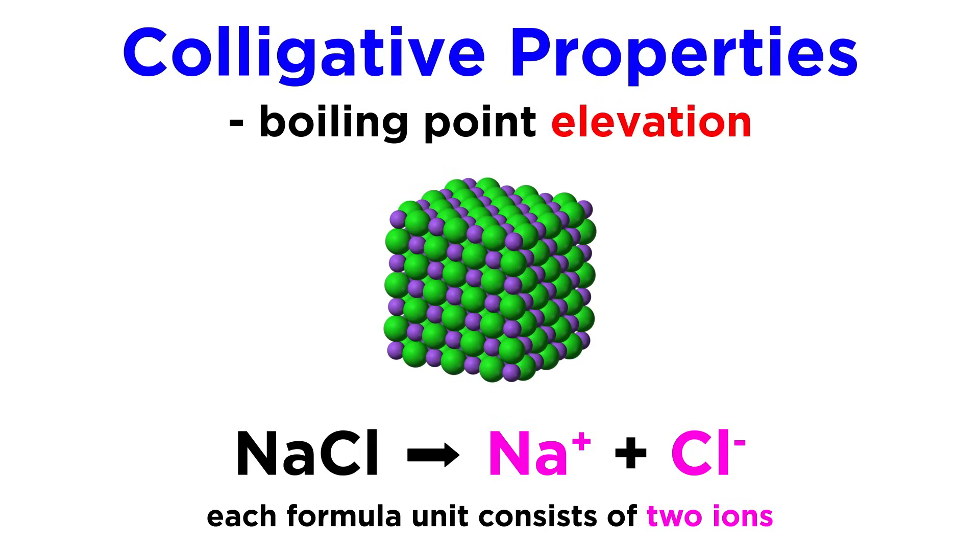The greater the number of ions in the formula unit, the greater the resulting concentration of solute once dissociation occurs. For example, one molar sodium chloride really means two molar in solute, since one formula unit produces two ions.